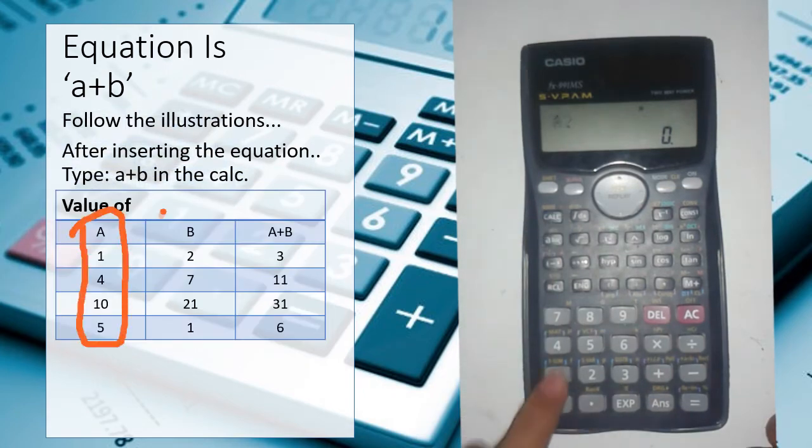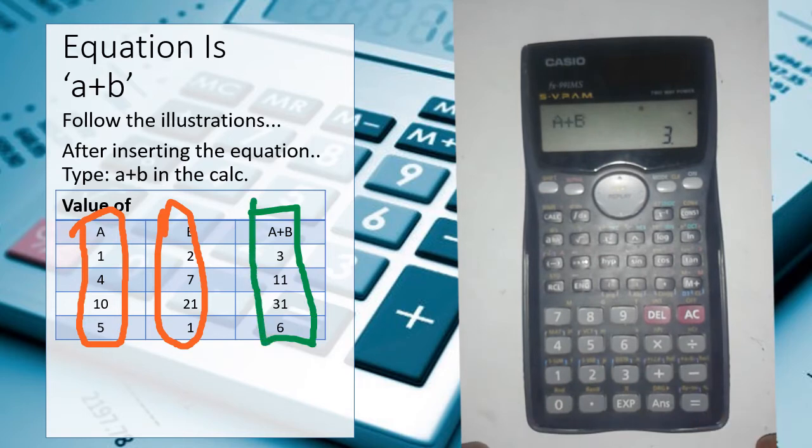Now for illustration purpose, I am inserting the values from the table. As you can see, I inserted a as 1 and b as 2. Now I got a plus b as 3.